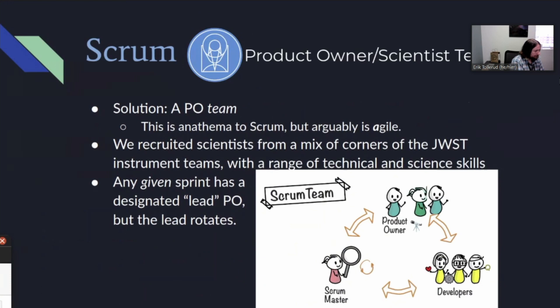So instead, we came up with a slightly altered version of Scrum that depends on the concept of what we're calling a PO team. In many corners of Scrum, this is anathema — a thing you're not supposed to do — but we like to think of it as agile with a lowercase 'a'. The way we did this was essentially to recruit a group of scientists from various corners of the instrument teams for the James Webb Space Telescope, intentionally spanning a range of technical or instrument knowledge, skills, and interests in the science realm. This team then acts as the product owners. Importantly, this didn't mean in a given sprint there were like four people in charge. There was still always a lead PO, because one of the whole points of Scrum is that there's somebody to ask for prioritization. So there's always one person who is the PO for that sprint, but the lead rotated through the several different people.